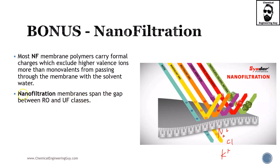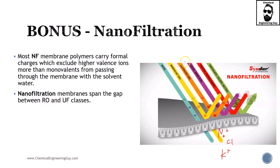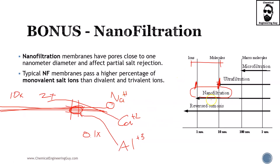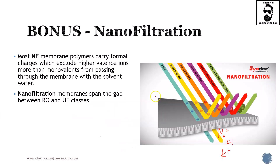NF membranes span the gap between reverse osmosis and ultrafiltration, which is great because reverse osmosis is a very extreme case and ultrafiltration is in the middle ground. That gray area is perfectly covered by nanofiltration.